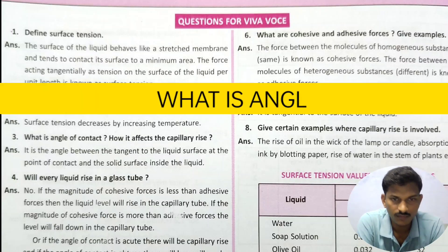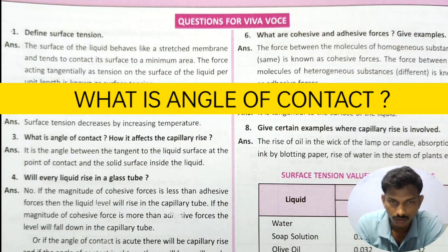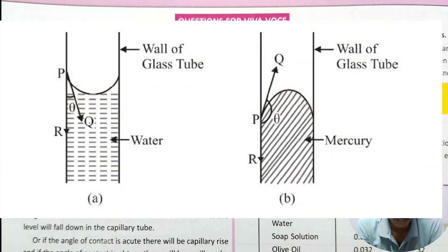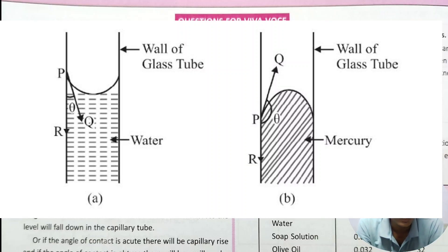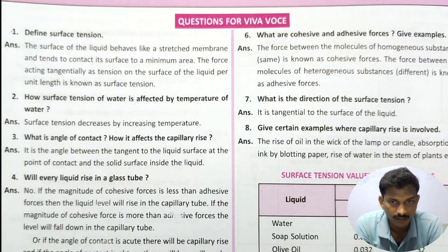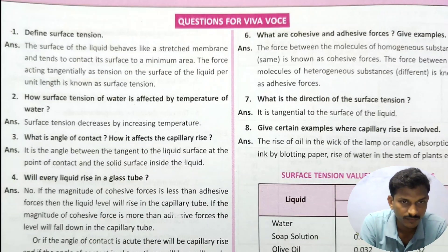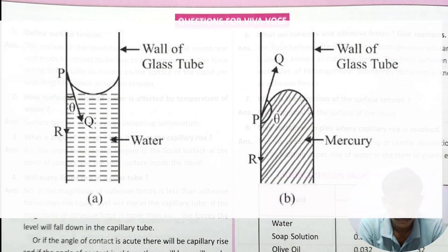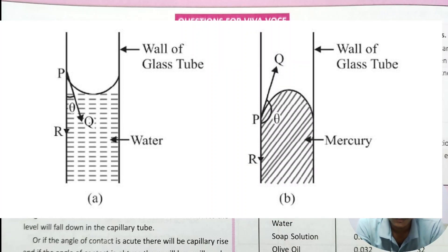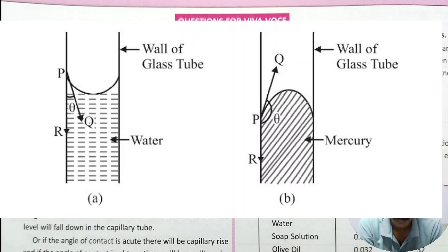Next question: Angle of contact — this is a very important question. We are now looking at the capillary tube. The capillary tube is dipped into water, and the water rises inside the capillary tube. The angle of contact is the angle measured inside the liquid between the solid surface and the liquid surface at the point of contact. We will show you a picture.